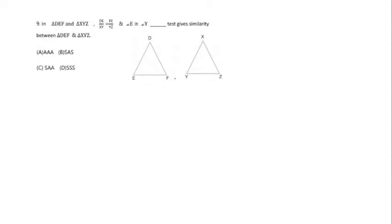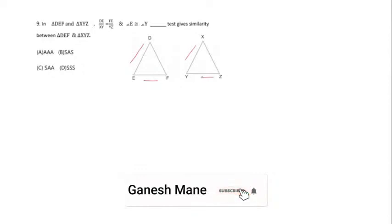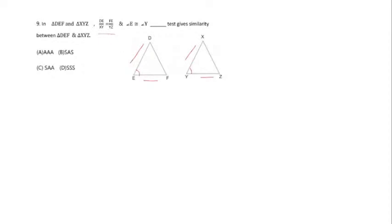The next question: triangles DEF and XYZ are given where DE divided by XY equals FE divided by YZ, with the included angle between the sides equal. Since two sides are in proportion and the included angle is given, these two triangles are similar by the SAS test. Option B is the correct alternative.